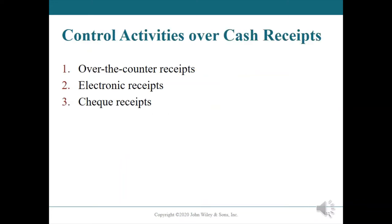Control activities over cash receipts. Cash receipts can take various forms: one, over-the-counter receipts; two, electronic receipts; three, check receipts — checks received either at the time of sale or at a later date by mail. The internal control procedures relating to cash receipts will vary from one company to another depending on the nature of their businesses.